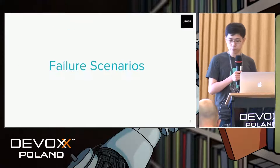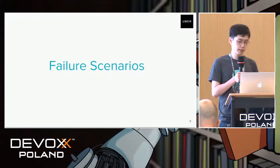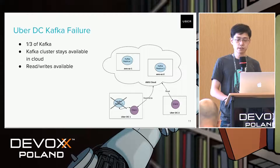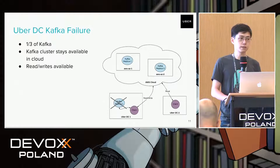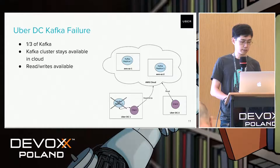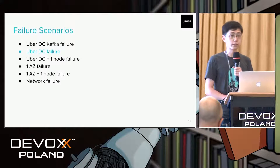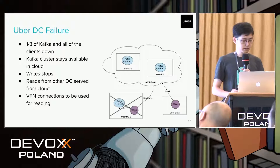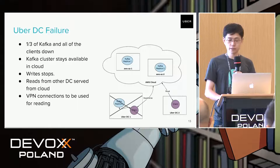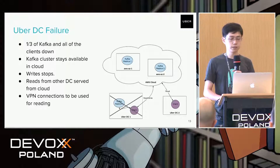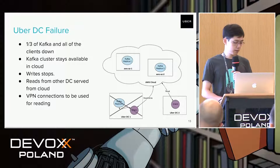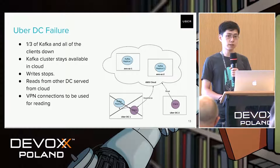Let's talk about the failure scenarios we want to support. The first scenario is Kafka nodes in the Uber data center are down. In this case, one third of the Kafka cluster is down but the whole service is still available in the cloud, since there are still two replicas live in the cloud and read and write are available for all clients in different data centers. The second scenario is the whole Uber data center is down. In this case, not only one third of the Kafka cluster is down but also the clients in that data center are down. The Kafka service is still available in the cloud, but writes stop. Clients in the remote Uber data center can still read from the cloud — we set up VPN connections for those clients to read from the cloud.